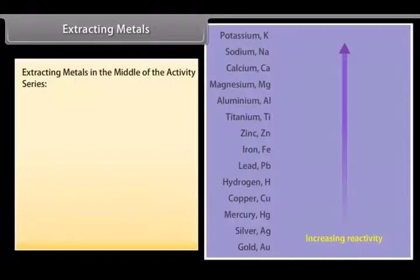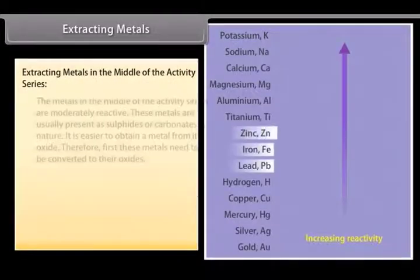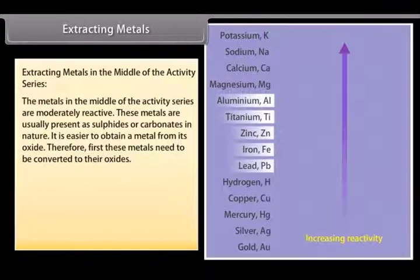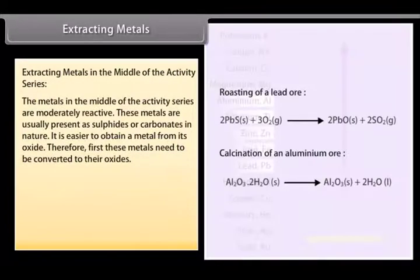Extracting metals in the middle of the activity series. The metals in the middle of the activity series are moderately reactive. These metals are usually present as sulphides or carbonates in nature. It is easier to obtain a metal from its oxide.